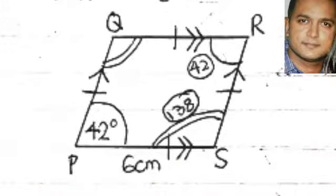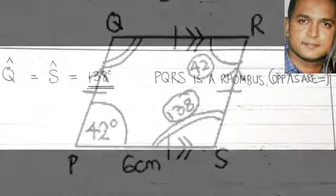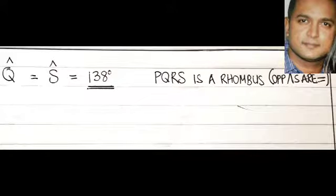If we look at the double markings at angle Q and angle S, we clearly see that both these angles are equal, and therefore we arrive at angle Q equals angle S equals 138 degrees. The reason: PQRS is a rhombus with opposite angles being equal.